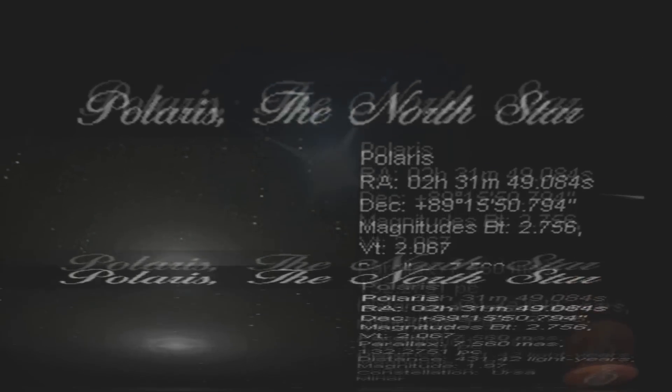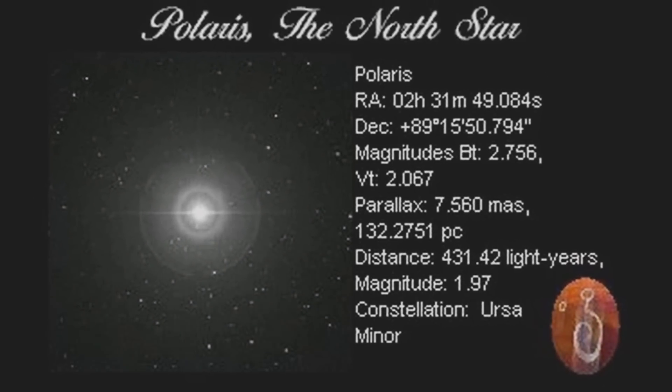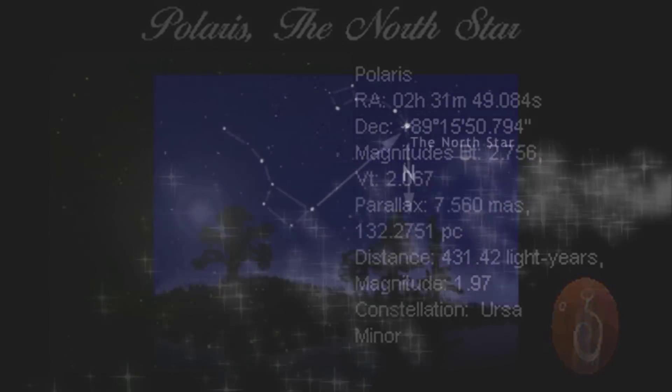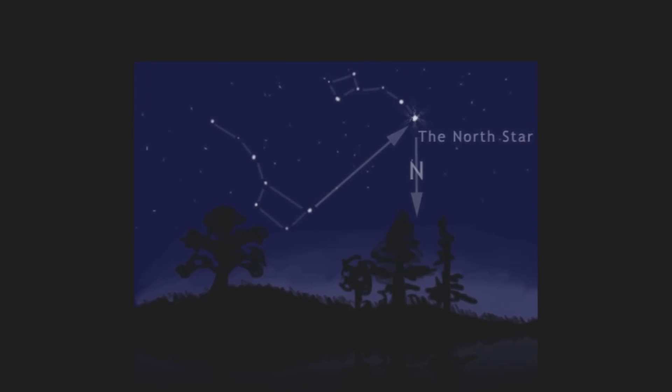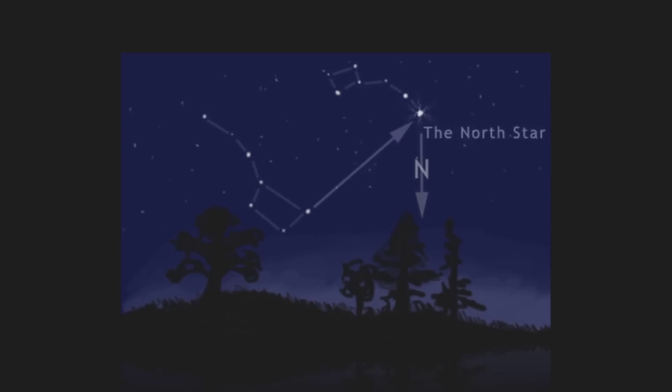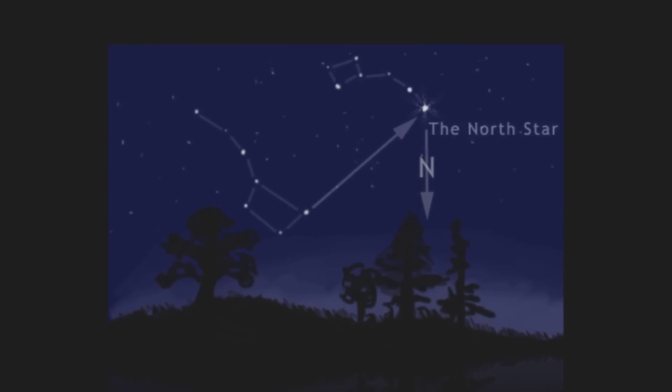Polaris the North Star is famous for holding nearly still in our sky while the entire northern sky moves around it. Polaris is not the brightest star in the nighttime sky as it is commonly believed. Polaris is only about the 50th brightest, however it is the brightest star in Ursa Minor. Polaris marks the way due north. As you face Polaris and stretch your arms sideways, your right hand points to east and your left hand points to west.